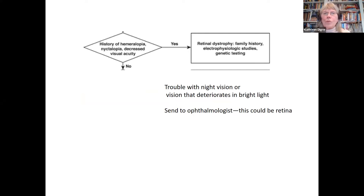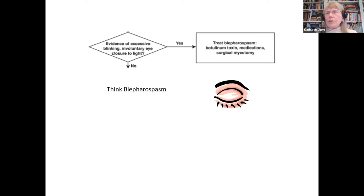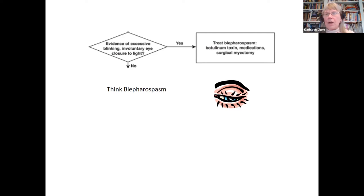The next step is to look for hemeralopia — everything being too bright — or nyctalopia, trouble seeing in the dark, or decreased visual acuity. Send these patients to an ophthalmologist for a retinal exam, since certain retinal dystrophies can cause severe photophobia. Our patient did not have these findings. Also, never miss blepharospasm — that repeated involuntary blinking and sometimes squeezing that can clamp the lids down when light is shined in the eye. It can be treated with botulinum toxin. Our patient did not have this finding either.